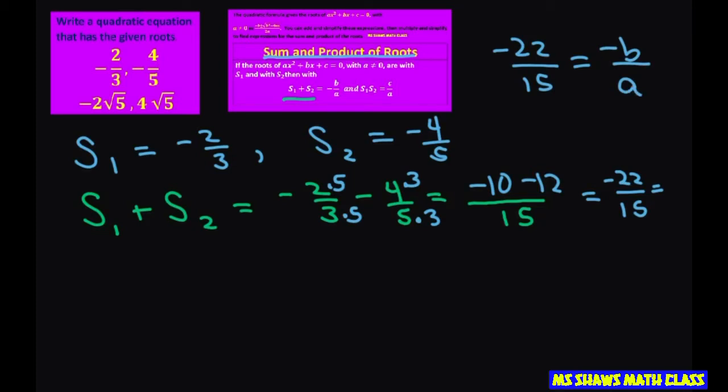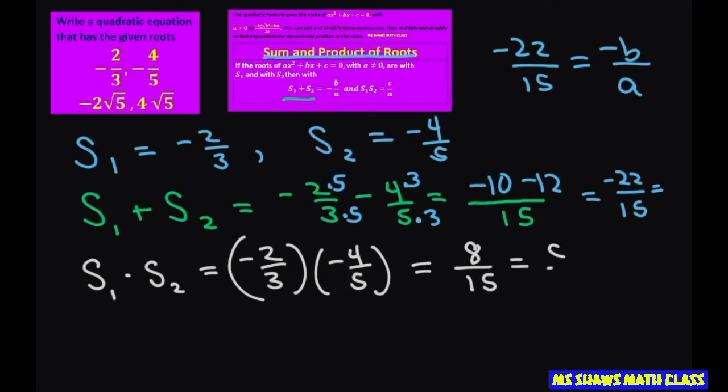Now for the product, let's multiply that. So solution one times solution two. That's going to be negative two-thirds times negative four-fifths. Multiplying across, that gives you eight-fifteenths. So that's your c divided by a.